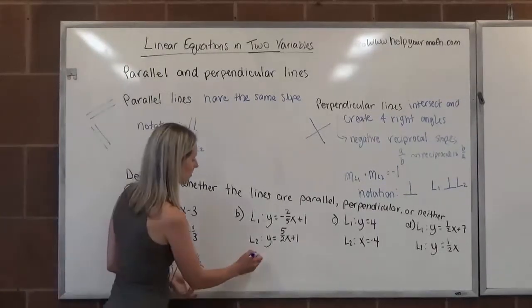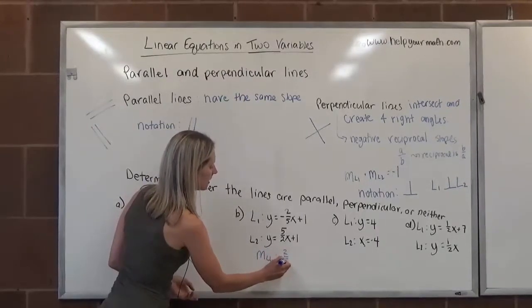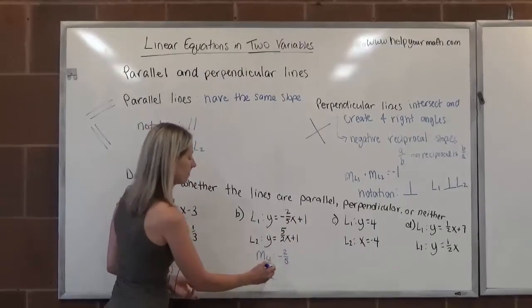Letter B, the slope of line one, so I'm going to say slope of line one, is negative two-fifths. And the slope of line two is five over two.